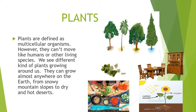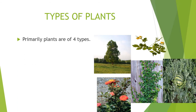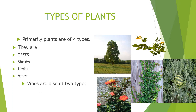These categories are trees, shrubs, herbs, creepers and climbers. Primarily plants are of four types: trees, shrubs, herbs, and vines. Vines are also of two types: creepers and climbers.